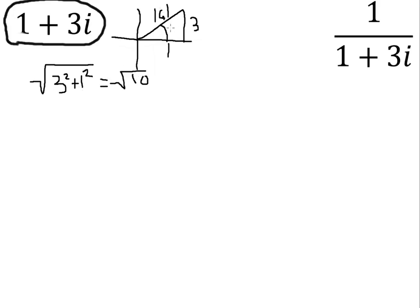To work out the argument, this part here, we have the opposite and its adjacent, therefore using the tan. So inverse tan 3 over 1, that gives us a value of 71.6.